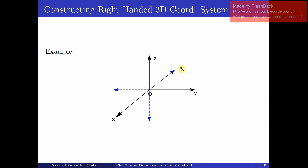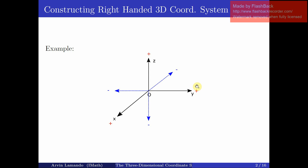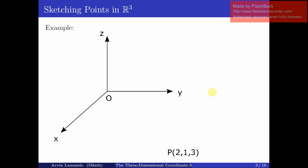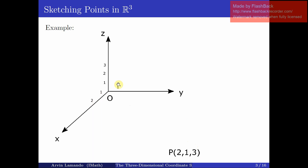The negative portions include the negative x direction, the negative y direction, and the negative z direction. Now we have the following point: (2, 1, 3). This is an ordered triple — the first coordinate always corresponds to the x coordinate, the second always corresponds to the y coordinate, and the third always corresponds to the z coordinate. Let's now mark this point on our axes.